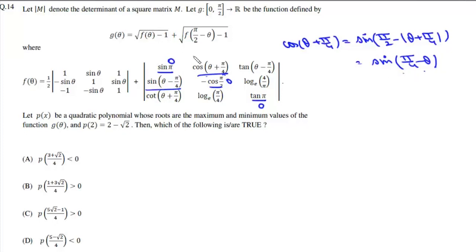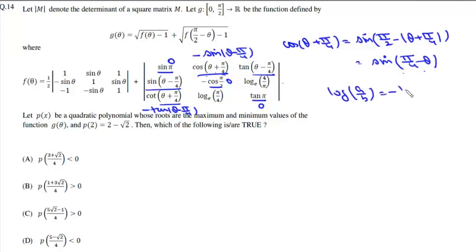So here we have θ − π/4 and sin(π/4 − θ) = −sin(θ − π/4). Similarly, the other entry gives −tan(θ − π/4). Also, log(a/b) = −log(b/a), so log(a/b) and log(b/a) are negatives of each other. This means the second determinant is skew-symmetric of order 3, and a skew-symmetric determinant of odd order is always 0.